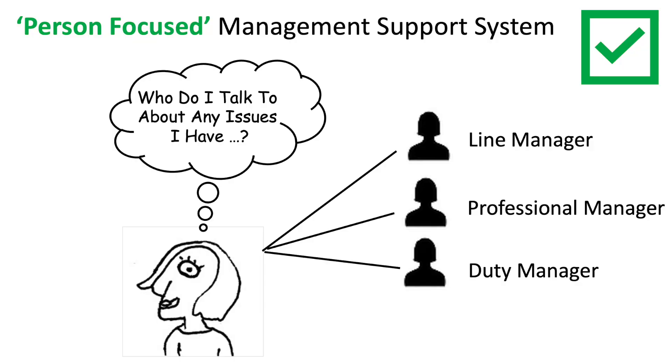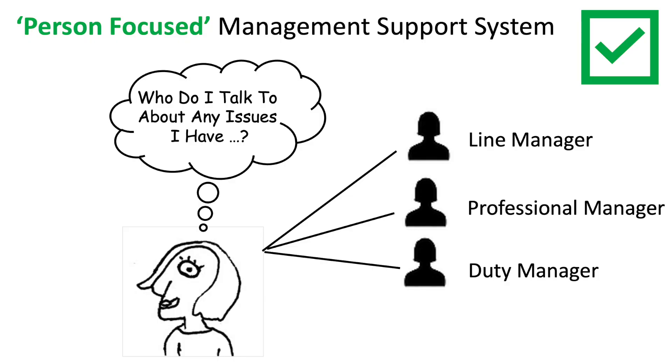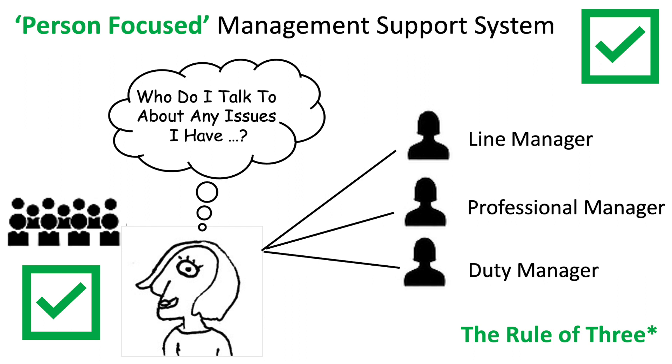In a flourishing school, we have what's known as a person-focused management support system. We take a completely different view — we want to minimize the number of leaders that a teacher needs to talk to about any issue at all. We introduce three roles: the line manager, the professional manager, and the duty manager, and we boil it all down to the rule of three — an important neurological concept for navigating complex systems like schools.